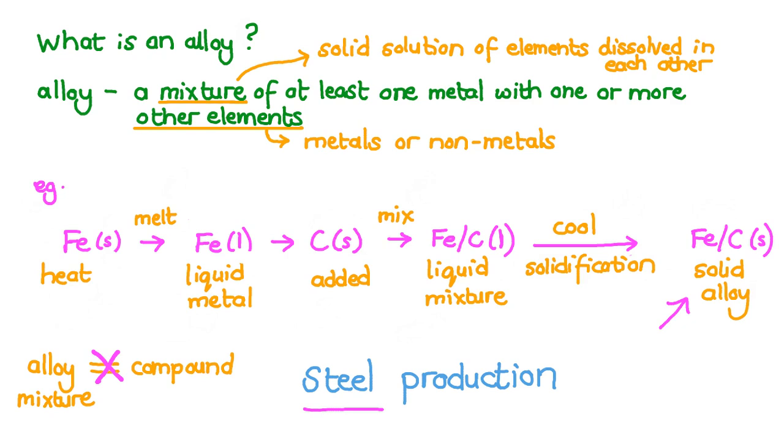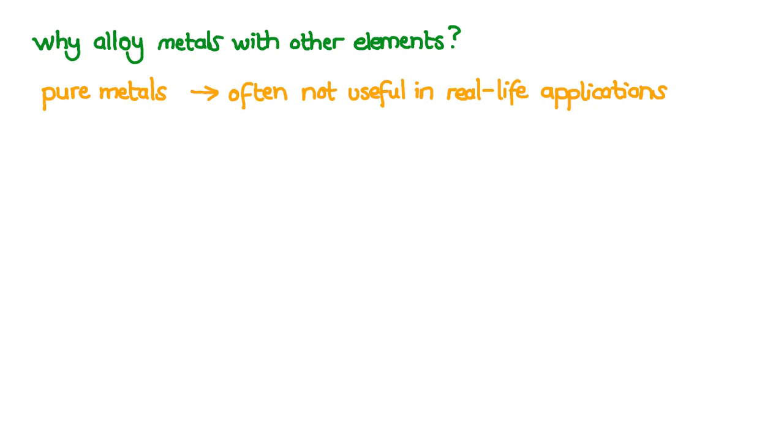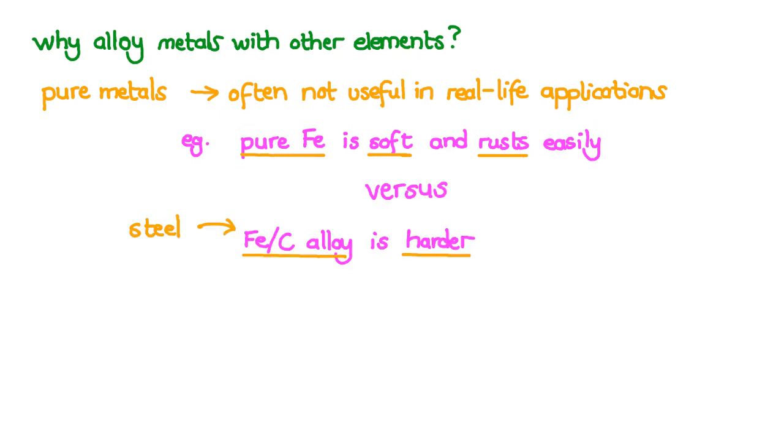But let's ask ourselves why alloy metals with other elements? Pure metals are often not useful in real life applications. For example, iron in its pure form is actually quite soft and rusts very easily. But by alloying iron with other elements, in other words mixing it with other elements, for example with carbon to produce the alloy steel, results in a material that has combined or new properties to that of its components.